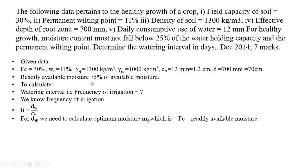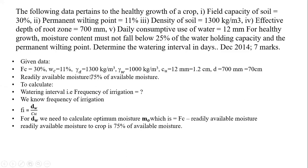For DW — that is the depth of water — we need to calculate the optimum moisture content, MO, which is nothing but the field capacity minus the readily available moisture. This MO is the lower limit below which the field capacity should not fall, above which whatever moisture exists will be easily absorbed by the root zones of the crop. So first we need to find the readily available moisture. The readily available moisture, as per the given data, is 75% of available moisture. Available moisture is the difference between field capacity and wilting coefficient.